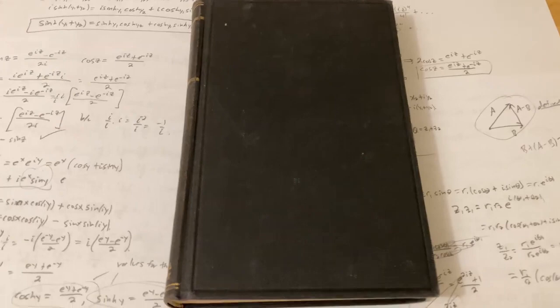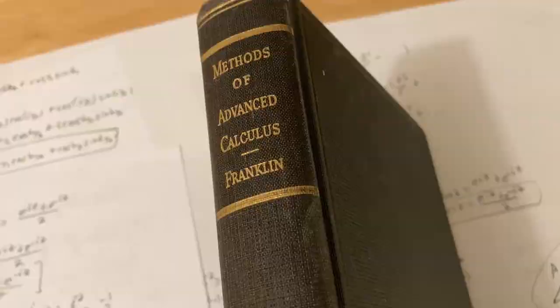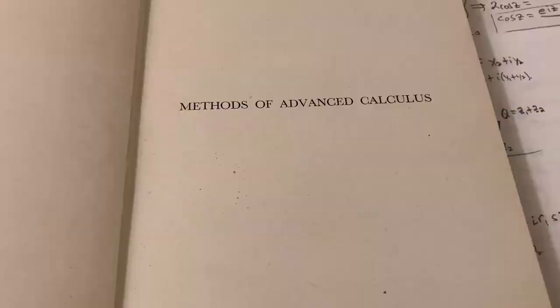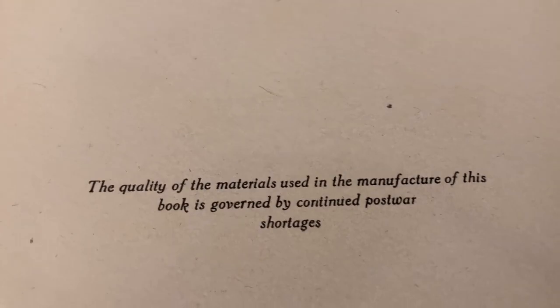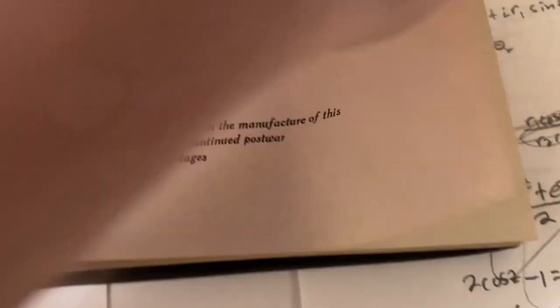It's called Methods of Advanced Calculus and it's by Franklin. Here's the inside of the book Methods of Advanced Calculus. The quality of the materials used in the manufacture of this book is governed by continued post-war shortages. And you can tell because the pages are actually really thin. Despite the pages being very thin, I still think it's better quality than a lot of the newer books out there today.